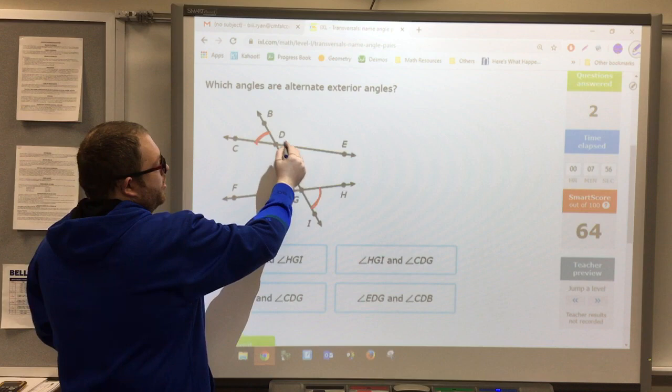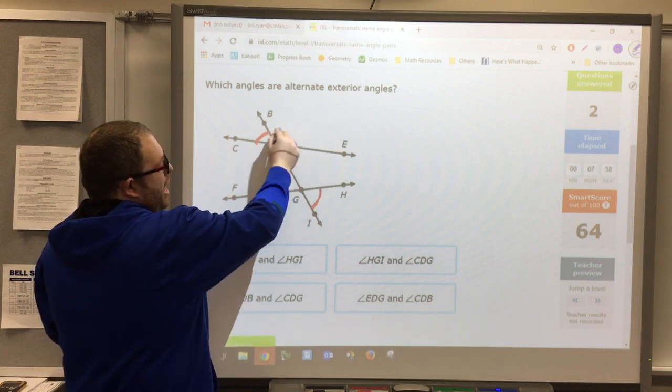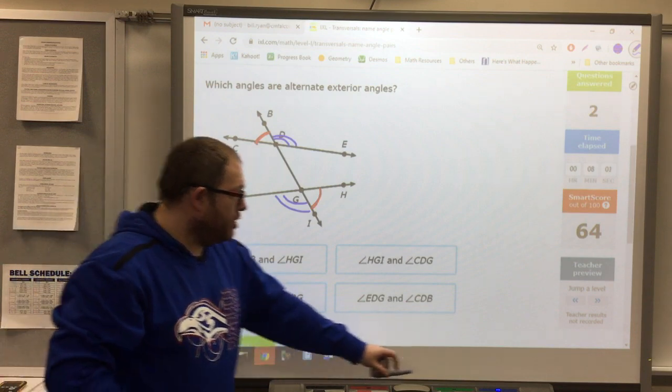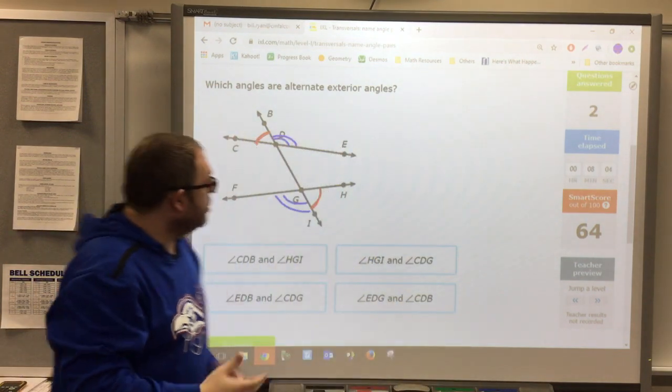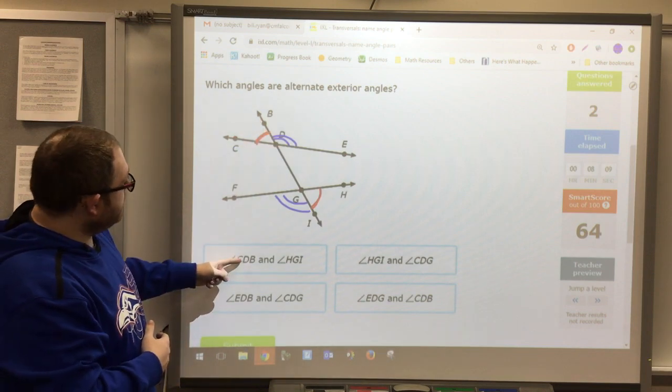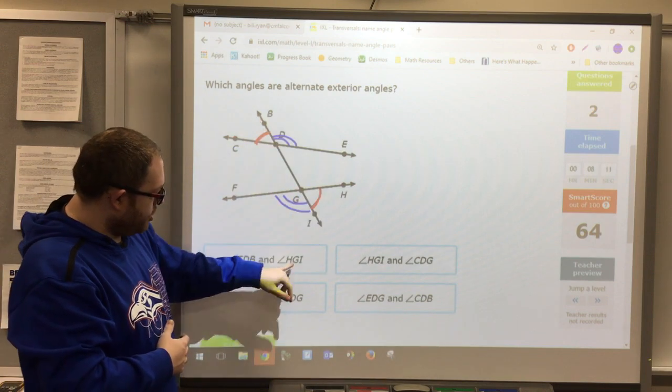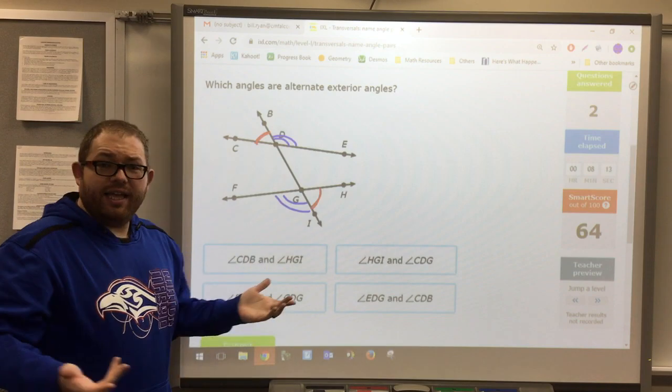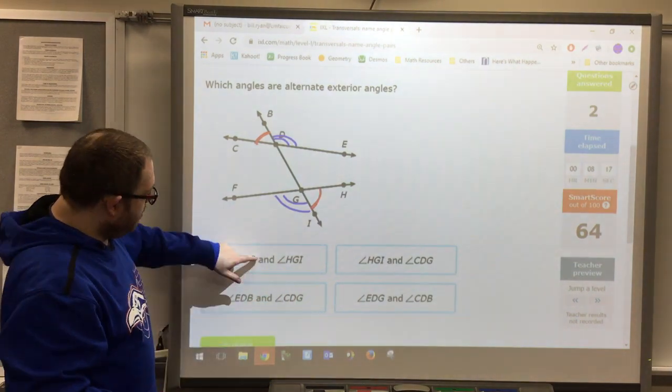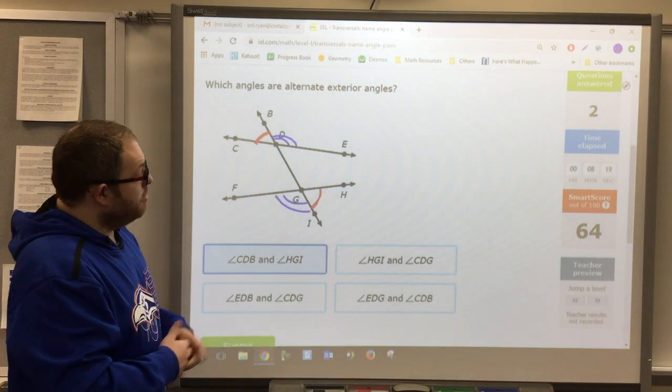I'll grab a different color and then the other one that's on the outside would match up with this one down here. So now I can just figure out which answer works. Do I have CDB? I do. Does it match up with IGH or HGI? It does. So fortunately I didn't have to look very hard. It ended up being our first option. But there you go.